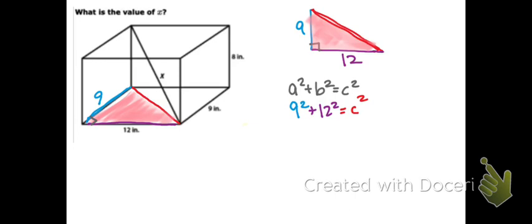That's the side that we're trying to find. So if we simplify this by squaring 9 squared and 12 squared and adding them together, now to find out what c squared is, I'm going to take the square root, because opposite of squaring is square root. And I see that c is 15.